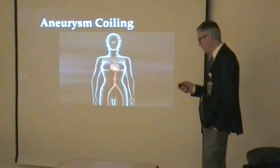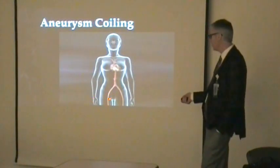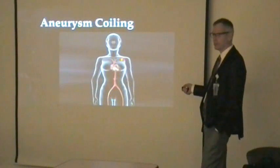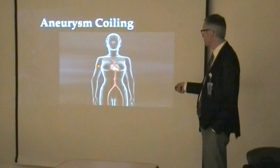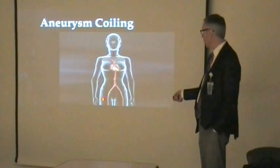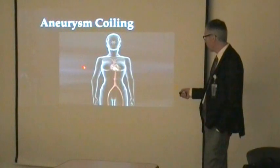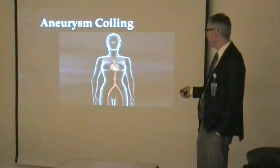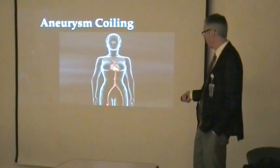For aneurysm coiling, we get access via the femoral artery — not radial like cardiologists — because the femoral artery allows us to get up over the arch into all the great vessels, including the carotid and vertebral arteries. Cardiologists find it easier to come back down to the heart from radial, but we're going the other direction. We also use larger diameter guide catheters, so femoral access is strongly preferred.